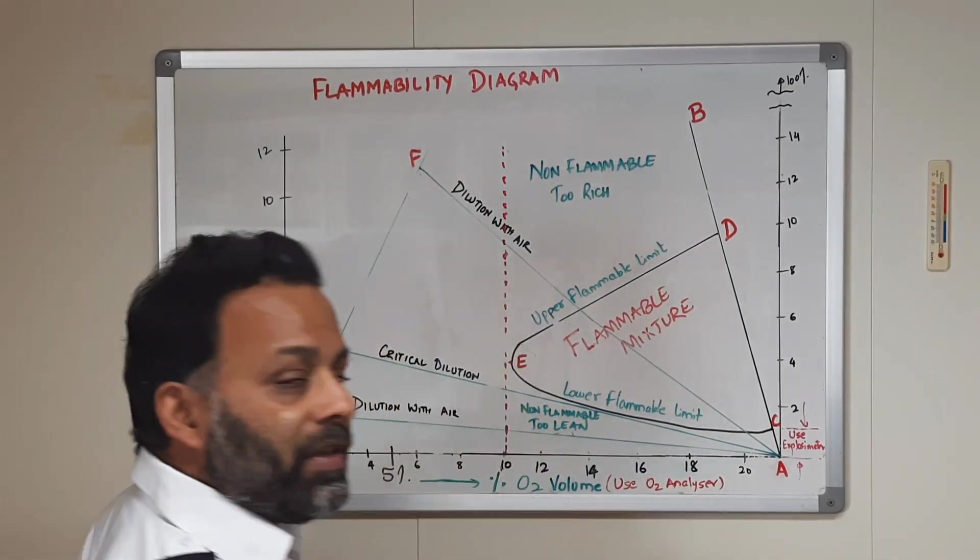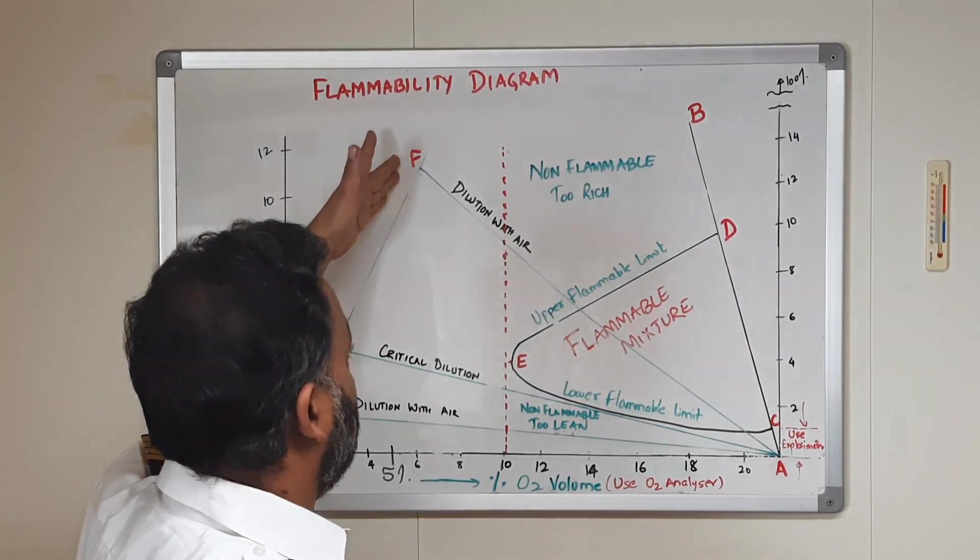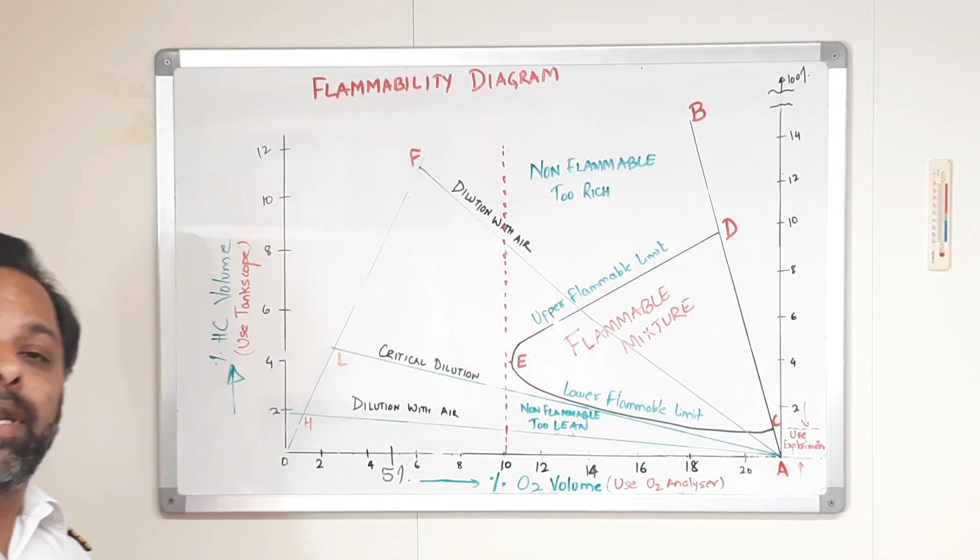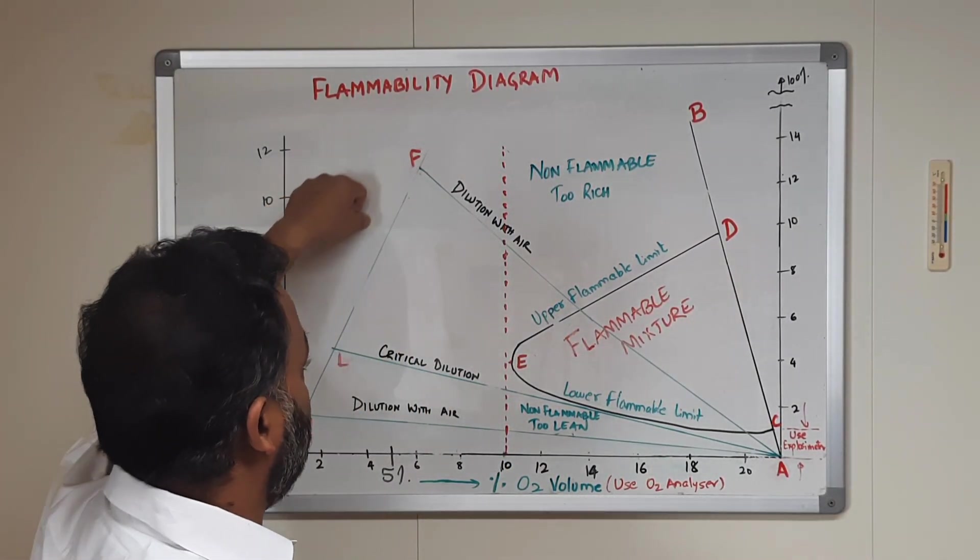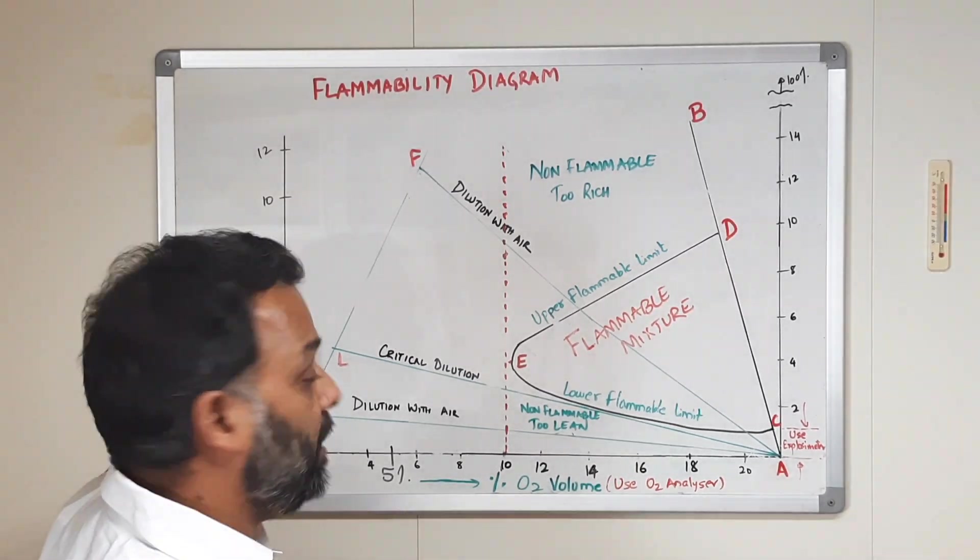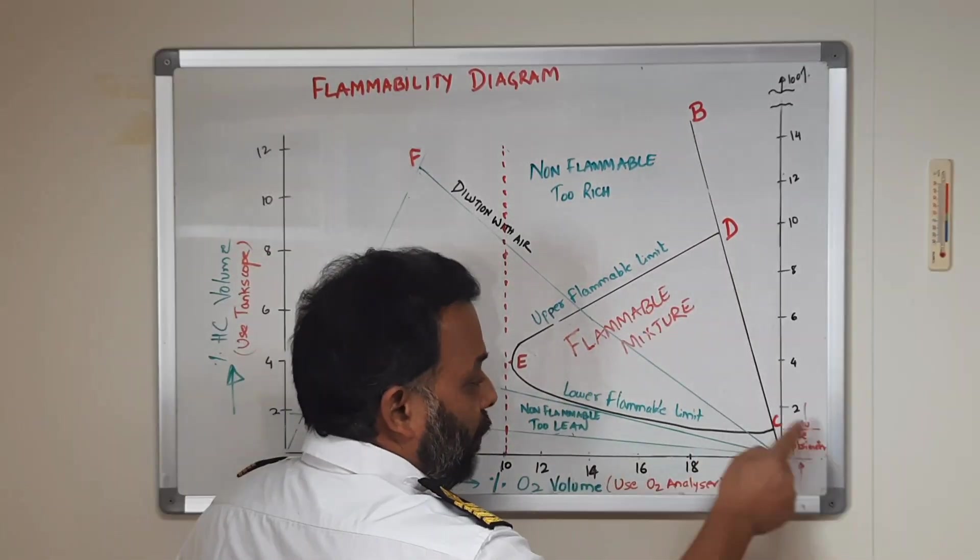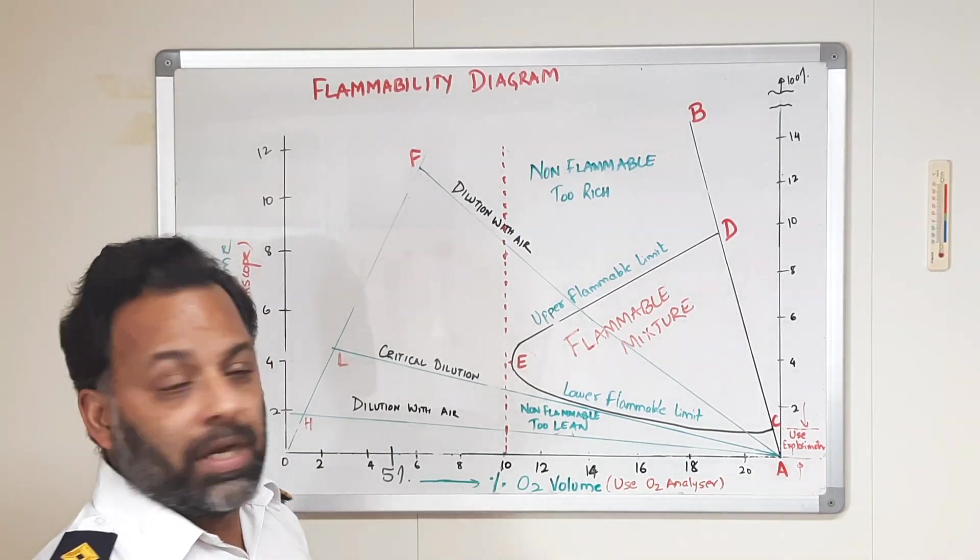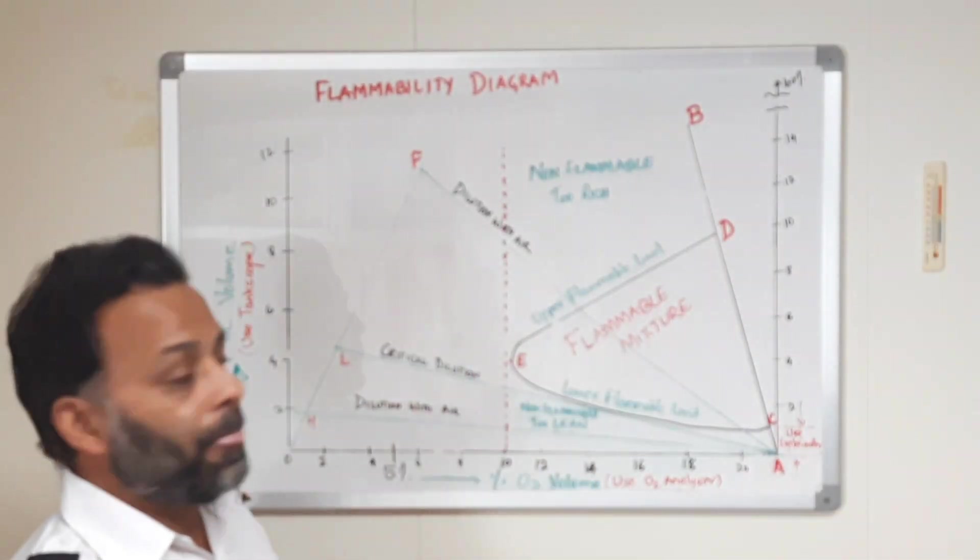When we are diluting with the air, let's say during discharging or when we are preparing our tanks for tank entry, at that point we keep on entering IG and then we dilute with the air. The idea is to avoid this flammable region, avoid this explosive region, whatever you call it. So this is how it is.